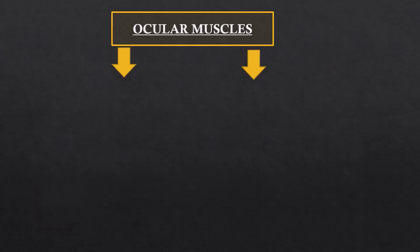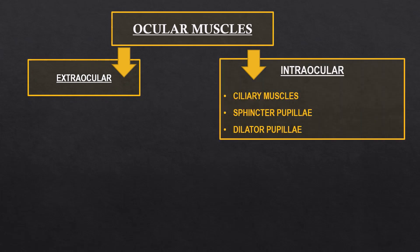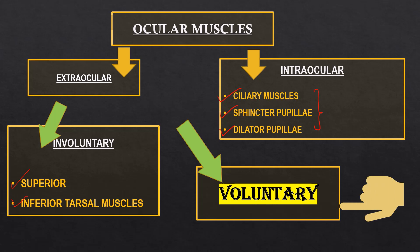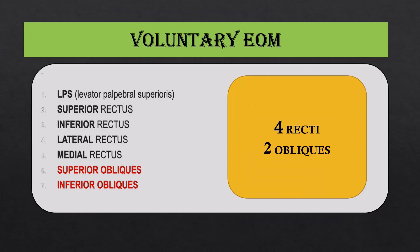So without any delay let's get started. The ocular muscles can be classified into the extraocular muscles and the intraocular muscles. Extraocular muscles are present outside the eyeball, whereas intraocular muscles are present within the eyeball. Within the eyeball we have the ciliary muscle, the sphincter pupillae, and the dilator pupillae, present in the ciliary body and in the iris. Extraocular muscles can be divided into involuntary muscles — like the superior and inferior tarsal muscles in the tarsal plate of the eyelids — and the voluntary group.